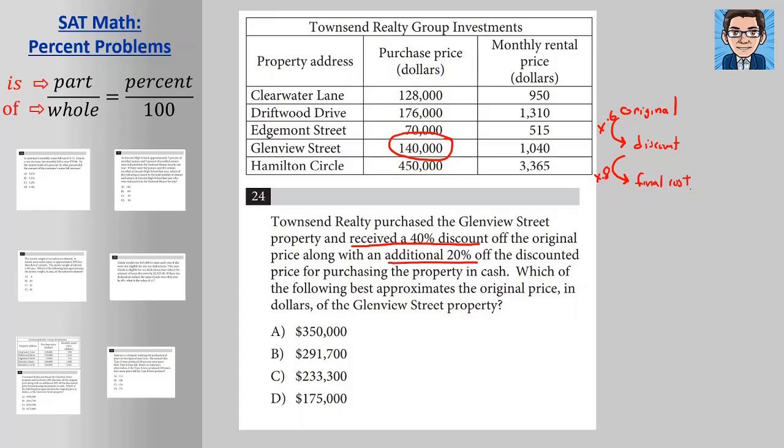So now we have what the final cost is at $140,000. So we can work it backwards. So to get from this discount to the final cost, we multiplied by 0.8. So going back, we could divide by 0.8. So if we take 140,000 and we divide by 0.8, we get 175,000. And again, to get the original to this first discount, we multiplied by 0.6. So then we could divide by 0.6. So we take 175,000, divide it by 0.6, and we're going to get 291,667, which is approximately B for the answer.